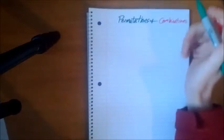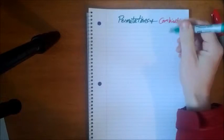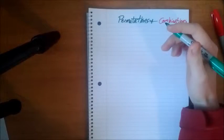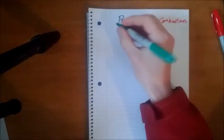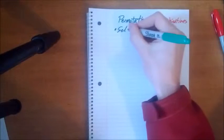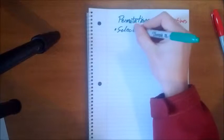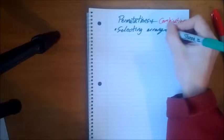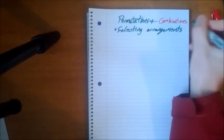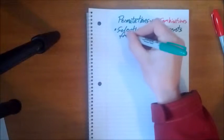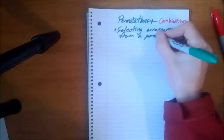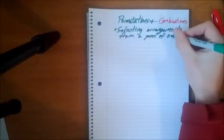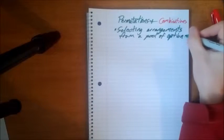So what are permutations and combinations? Well, they are just ways that we can select arrangements of different things from a pool of options. Selecting arrangements from a pool. Not a literal pool, but you know, a selection of options.